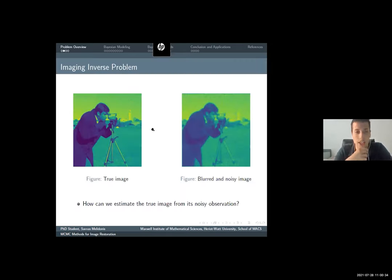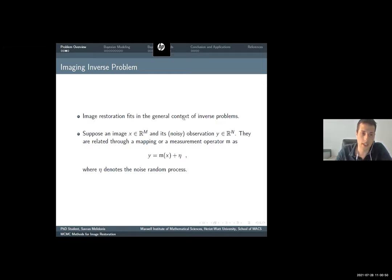As Kostas said, the idea is that we have a blurred and noisy image, and our aim is to estimate the true image from its noisy observation. This is typically an inverse problem. We have our image X, we have our observation Y, and these two are related through a mapping or a measurement operator, where it denotes the noise random process.